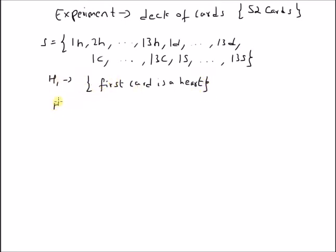The possible outcomes or the outcomes in this event are basically 1H, 2H, and so on to 13H. There are 13 outcomes in this event.